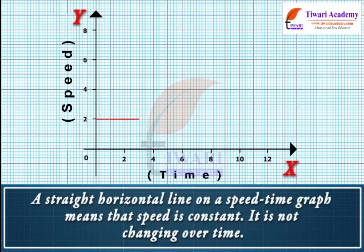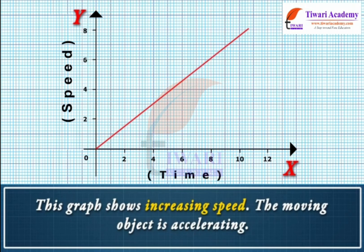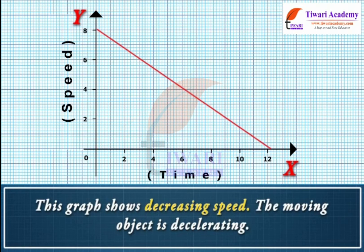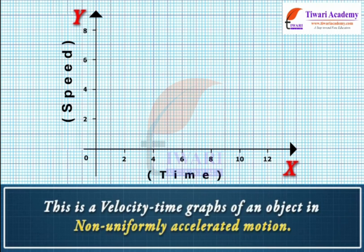A straight horizontal line on a speed-time graph means that speed is constant — it is not changing over time. This graph shows increasing speed, meaning the moving object is accelerating. This graph shows decreasing speed — the moving object is decelerating. This is a velocity-time graph in non-uniformly accelerated motion.